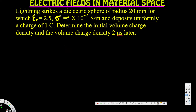Let's look at this problem. The question is asking: lightning strikes a dielectric sphere of radius 20 millimeters, for which epsilon_r is equal to 2.5, sigma is equal to 5 times 10 to the power minus 6 S/m, and deposits uniformly a charge of one coulomb. Determine the initial volume charge density and the volume charge density two microseconds later.